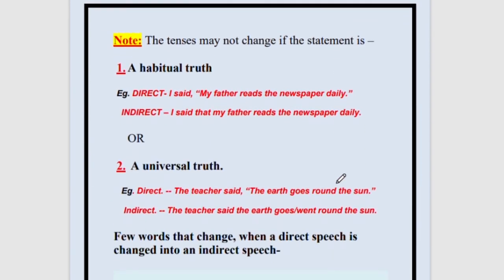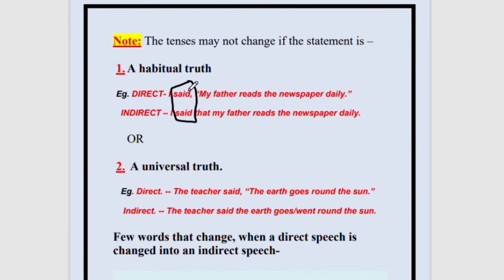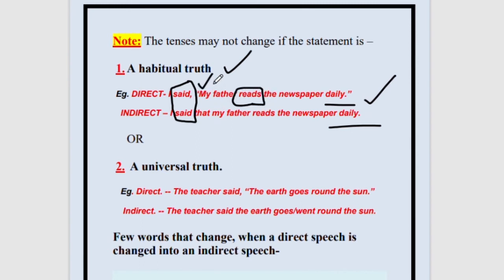Now, a very easy topic — the tenses may not change even when the reporting verb is in past tense. Why? If it is a habitual truth. Habitual truth means every day I do something — every day I jog, every day I drink water in the morning, every day I go to school. These are daily events. So if you find words like 'daily,' 'every day,' 'usually,' 'normally,' this means it is a habitual truth — a habit. Then you will not change the tense inside, even if the reporting verb is in past tense.